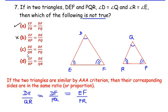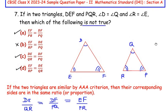equals DF/PQ. This is the correct option. The final one is EF/PR = DE/QR, which is also a true statement. So the only not true or false statement is option B. The answer for this question is option B.